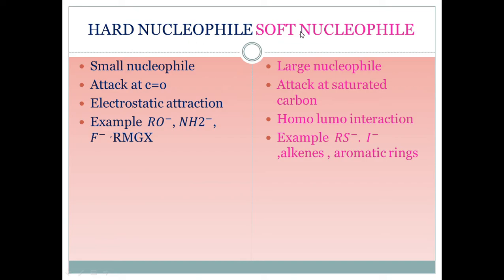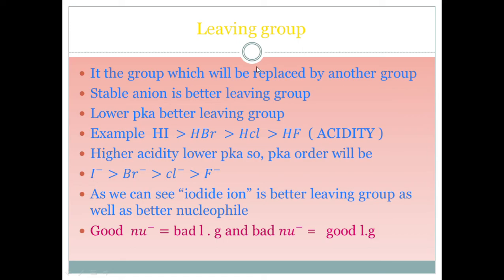There are two types of nucleophiles: hard and soft. Hard nucleophiles are small in size and do not provide electrons easily; they attack on the carbonyl group. With electrostatic attraction from the electrophilic carbonyl carbon, they can provide electrons. Soft nucleophiles are large and attack at saturated carbon — as covered in nucleophilic substitution reactions — via HOMO-LUMO attractions. RS⁻ and I⁻ are soft nucleophiles, while alkenes with double bonds and aromatic rings are also examples.